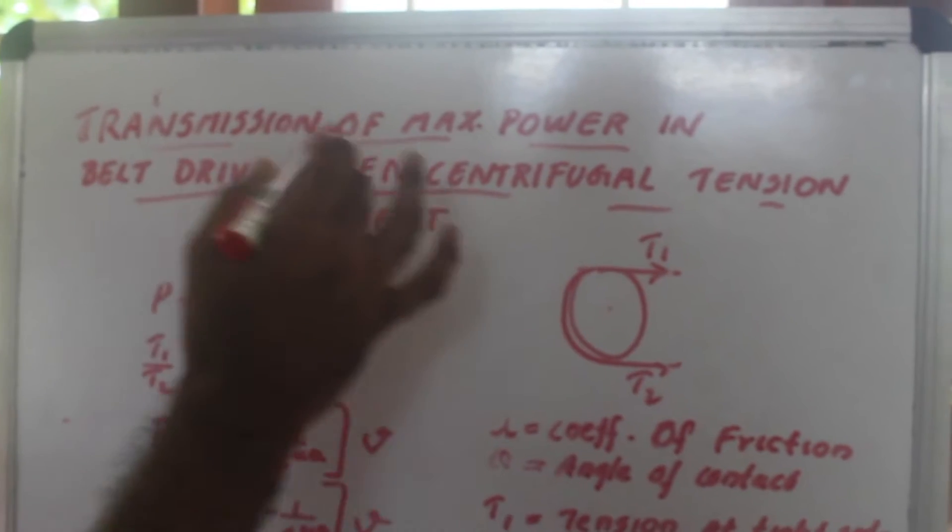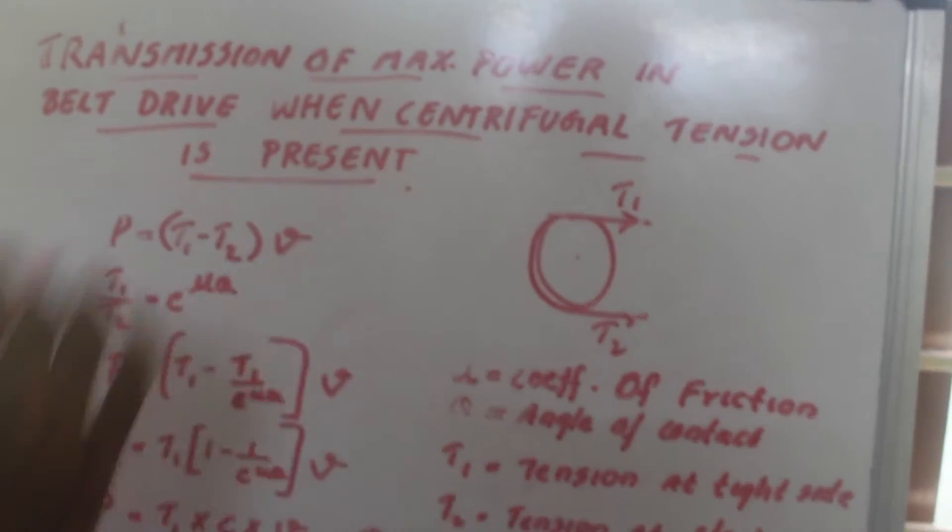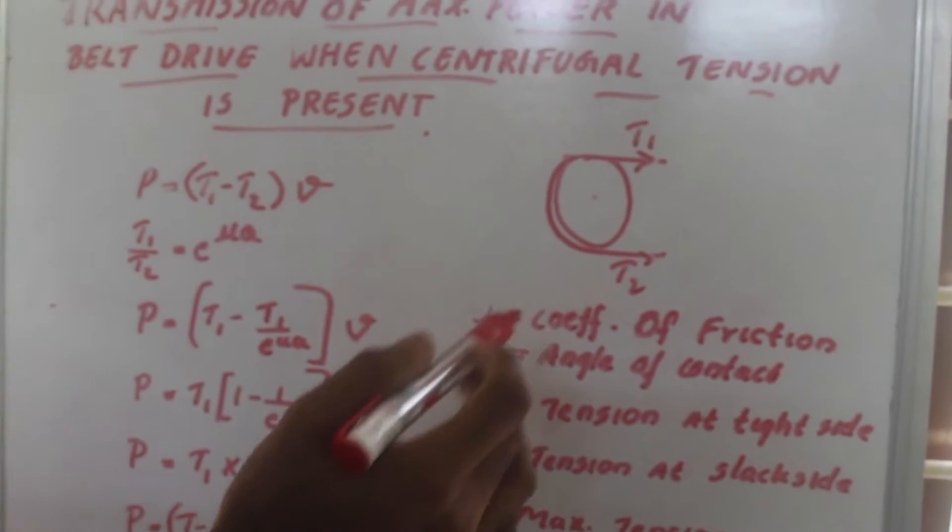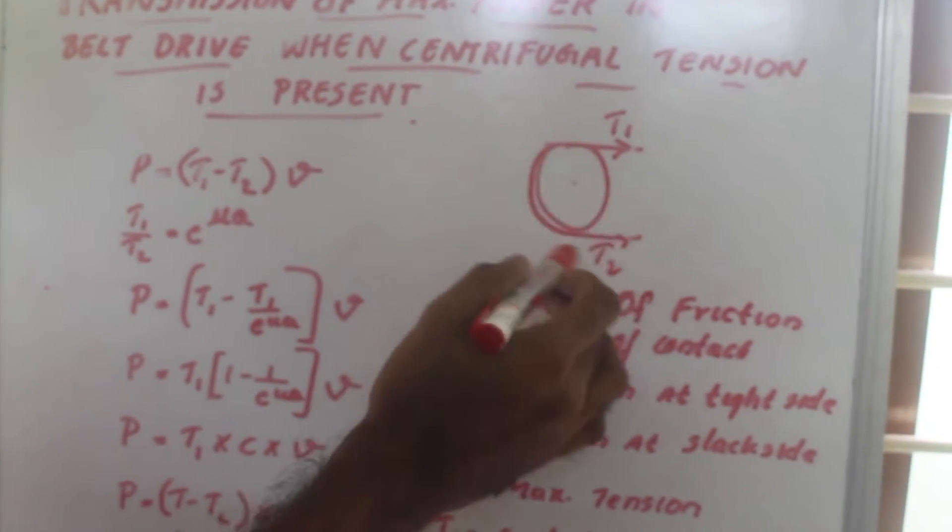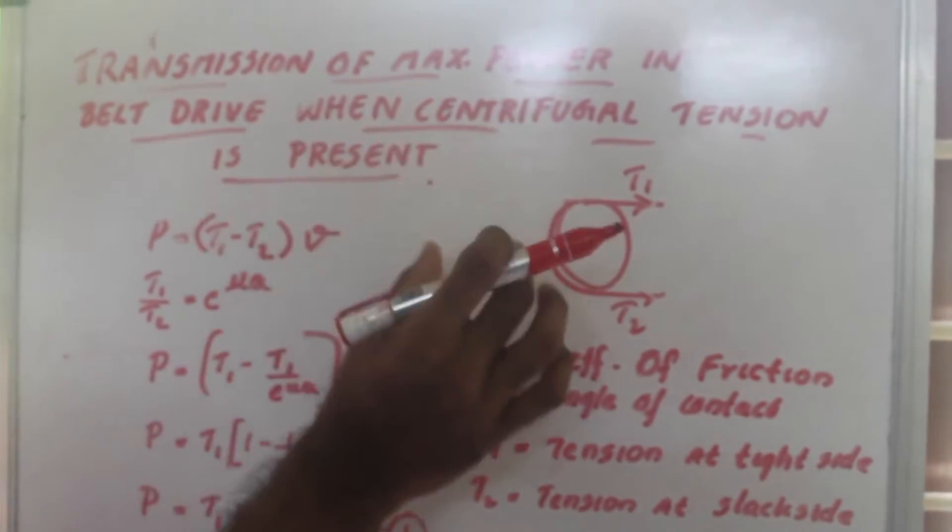Let us talk about transmission of maximum power in belt drive when centrifugal tension is present. We know that the belt continuously runs over the pulley, so there should be some centrifugal force acting on it.